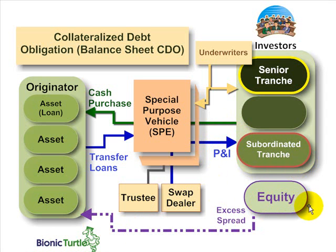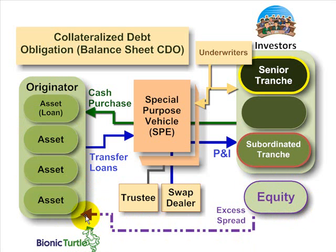Because we're talking about a balance sheet CDO, what is typical is that the bank retains or keeps this equity tranche — this junior-most tranche — which is an important incentive in the balance sheet CDO. If the originator has to keep this equity tranche, and remember this equity tranche is going to suffer the first defaults, that's an important incentive for the bank not to repackage a set of lemon loans, because they'll suffer along with the investors.